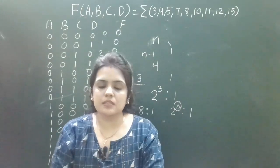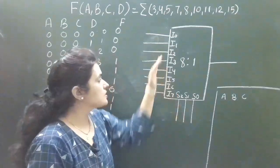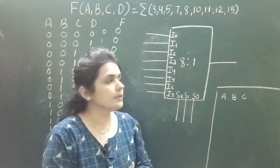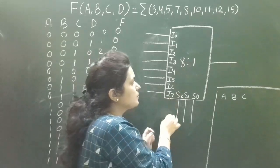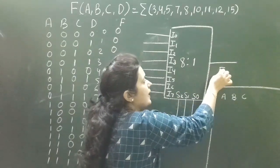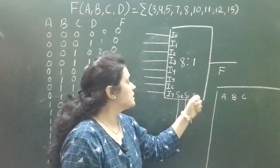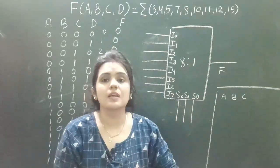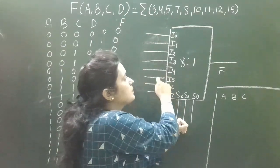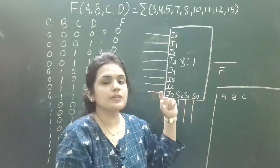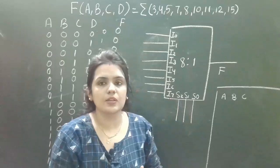Since we need 3 selection lines, we use a 2³-to-1, that is an 8-to-1 multiplexer. We draw the block diagram of the 8-to-1 multiplexer: it has 8 input lines I0 to I7, one output line F, and 3 selection lines S0, S1, and S2. The selection lines decide which input is forwarded to the output.